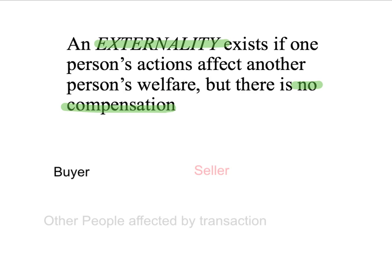To show this another way, when a seller sells something to a buyer, whether it's a good or service, the buyer compensates the seller. In other words, there's a flow of dollars back from the buyer to the seller. An externality exists if there's not just this flow of dollars and flow of goods between the buyer and the seller, but there's also other people outside the market who are affected in some way by this transaction. They may be better off or they may be worse off, but there's no compensation.